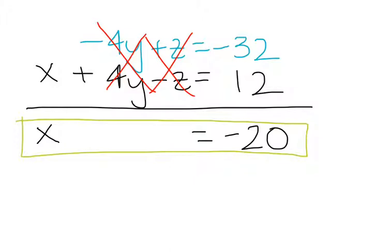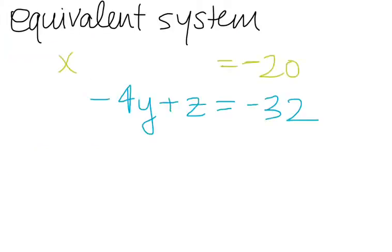And so again, we're left with an equivalent system. So here is my equivalent system, and I can no longer eliminate any variables. So I know that x is just stuck at negative 20. So in every possible solution, the x coordinate of that solution, or the x variable, I'll have to substitute in negative 20. But there are a lot of ways that negative 4y plus z can equal negative 32.